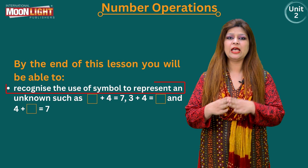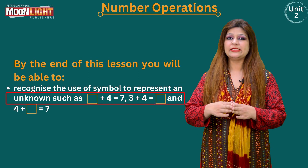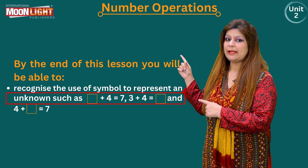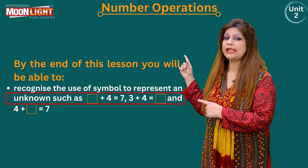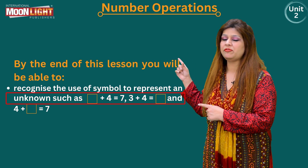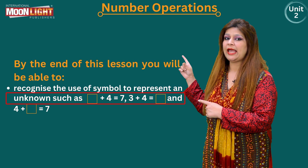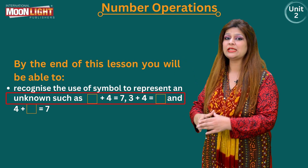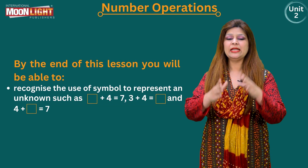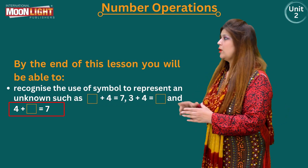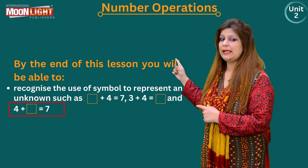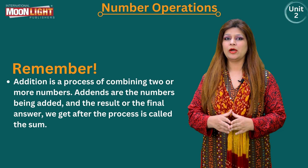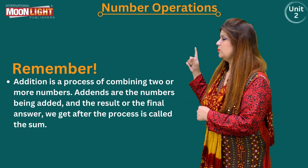By the end of this lesson you will be able to recognize the use of a symbol to represent an unknown. For example, an empty box plus four equals seven is the same as three plus four equals an empty box, and also four plus an empty box equals seven.